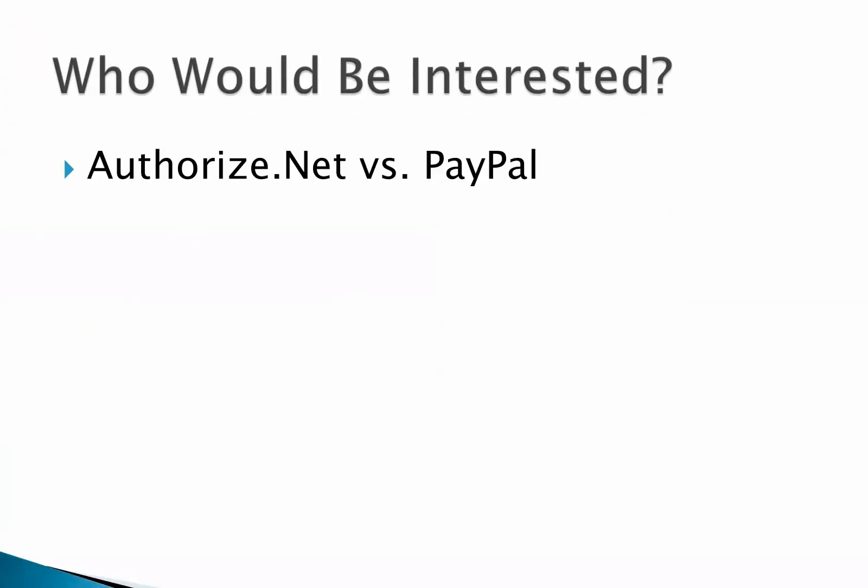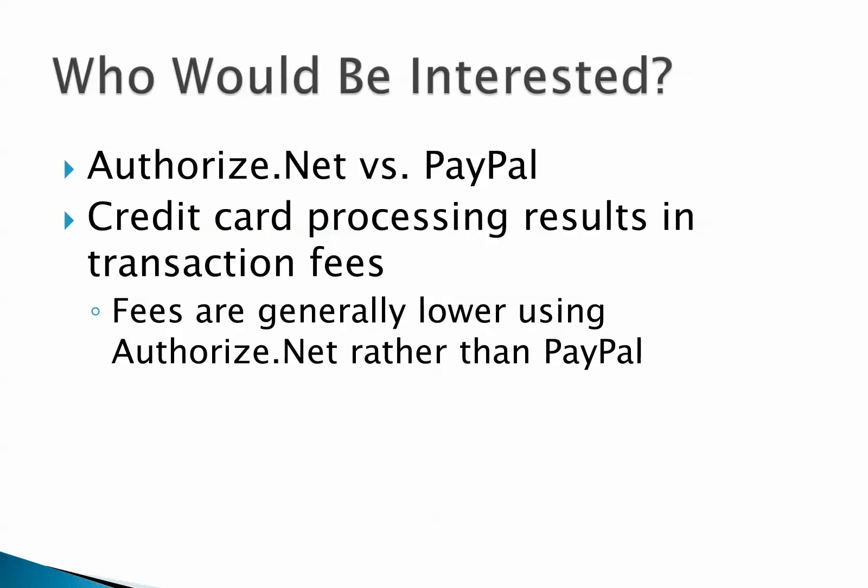The people who would be interested in this customization are those familiar with the cost savings benefit of using Authorize.net for credit card processing as opposed to PayPal. By default, iMIS is configured to use PayPal for credit card processing transactions, and each transaction usually results in a transaction fee. Authorize.net transaction fees are generally lower than PayPal's, but in order to reap the benefits of this, you will need to install a custom payment gateway like the one we've developed for Authorize.net.